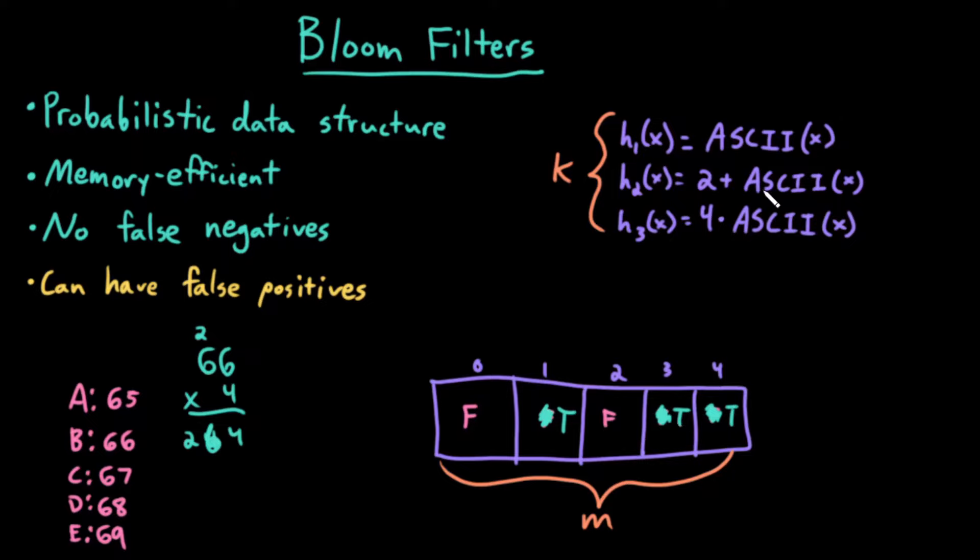Let me try the next one. 68 plus 2 is 70, mod 5 is 0. Index 0 is false. If d actually existed in this bloom filter, my insertion would have set this index to true. So the fact that this index is false means d definitely does not exist in my bloom filter. So I can confidently say with 100% confidence, d is not in this bloom filter.